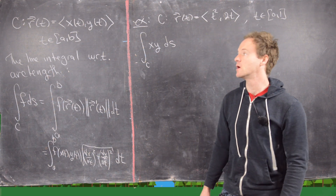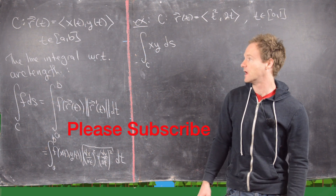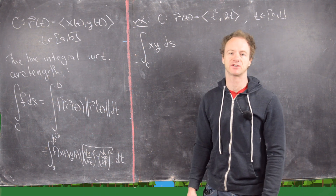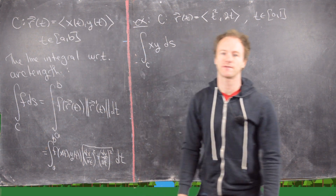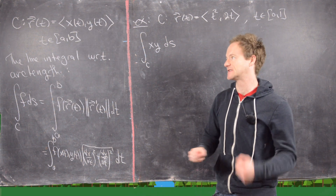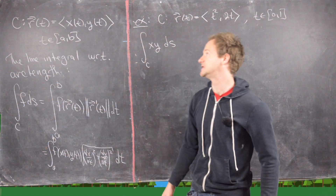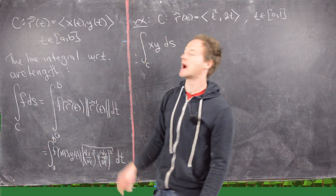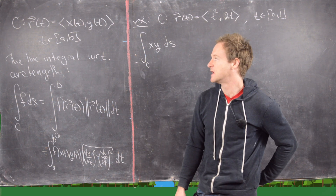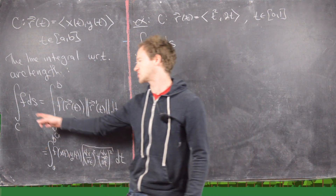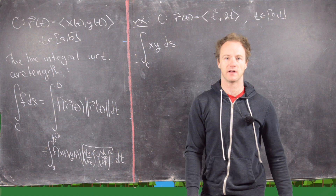In a previous video we derived the formula for the line integral with respect to arc length. Let's recall what we had. If we've got a vector version of a curve or parametric equations — it's the same thing — this curve C is defined by R of T which is (X(T), Y(T)), with T trending from A to B. Then the line integral with respect to arc length of a function F ds can be written in this vector form.